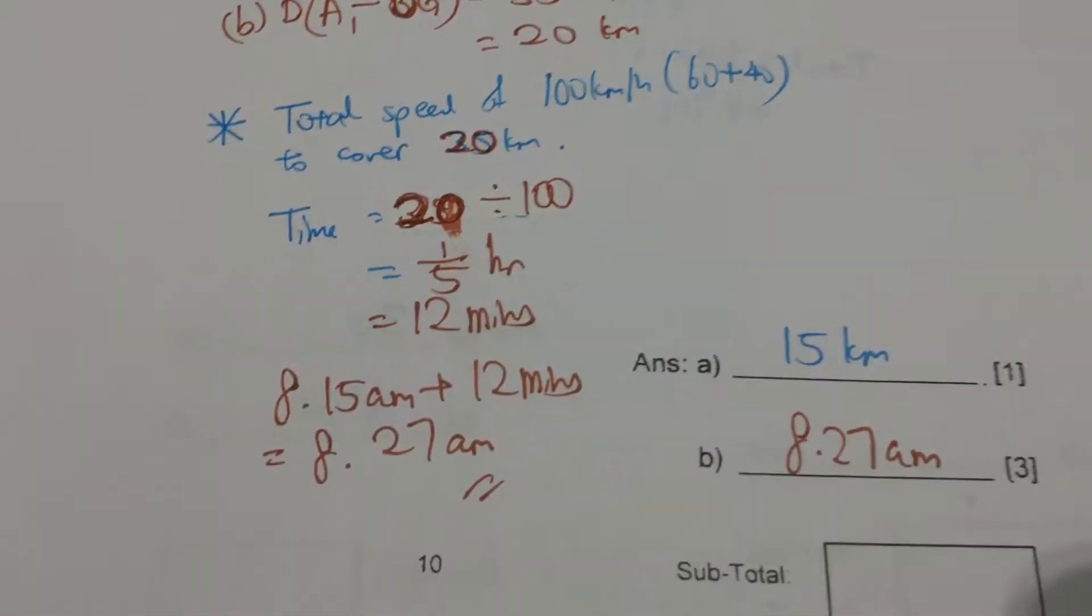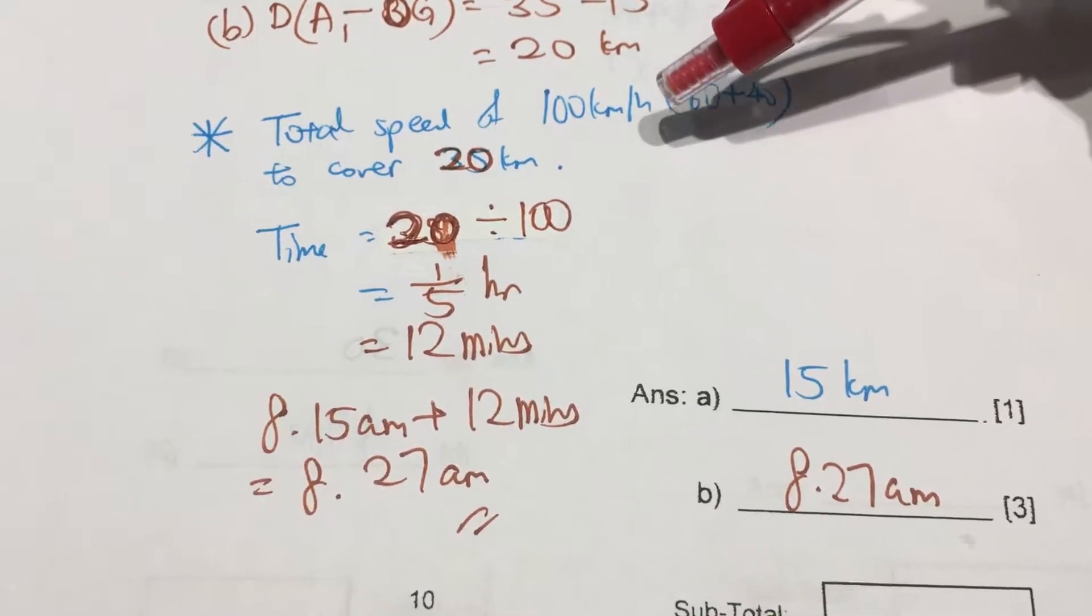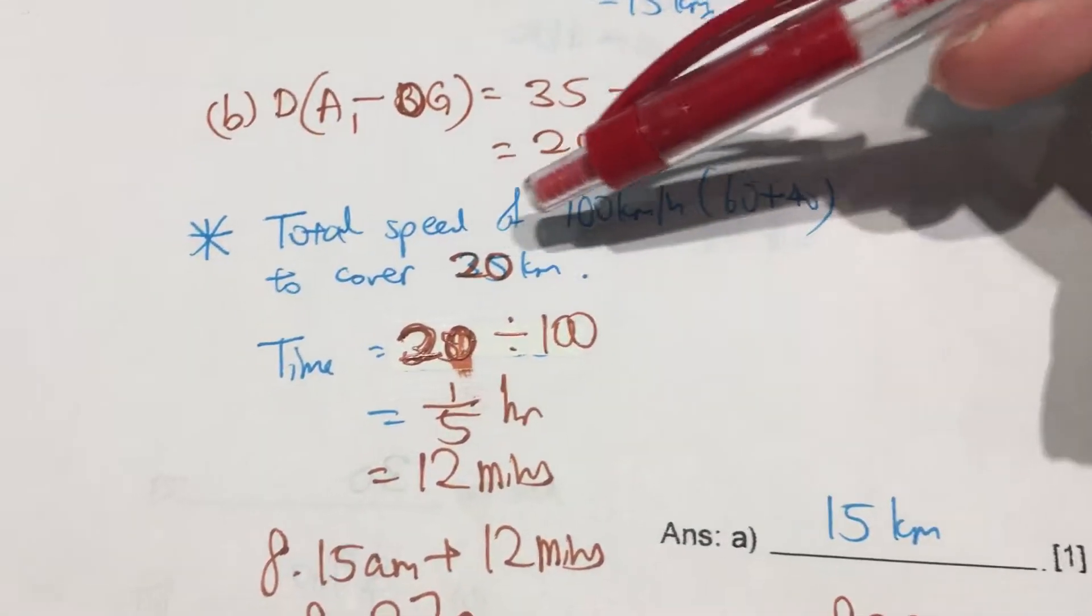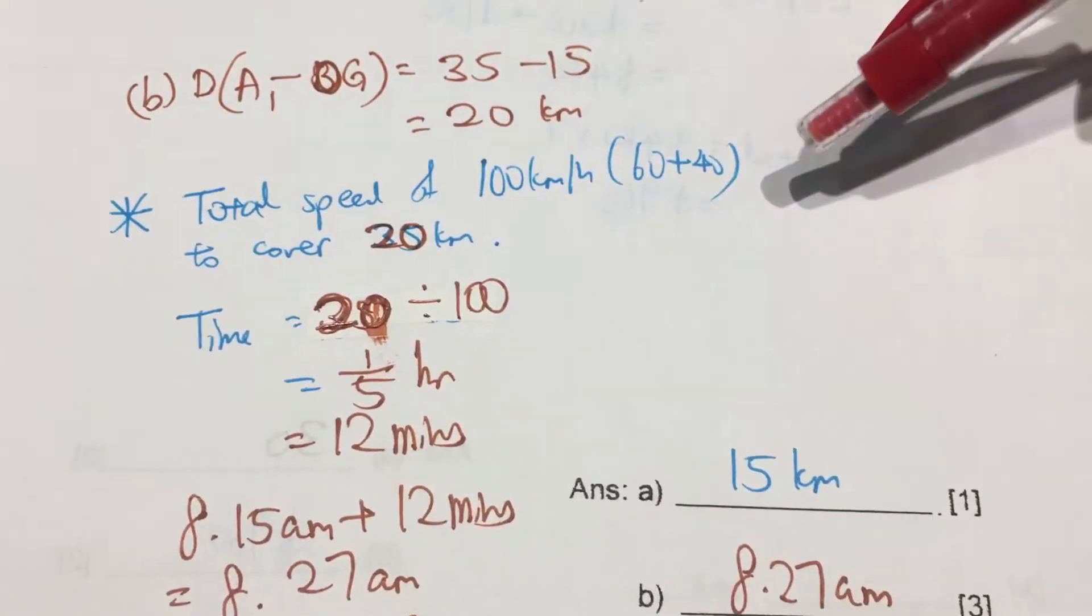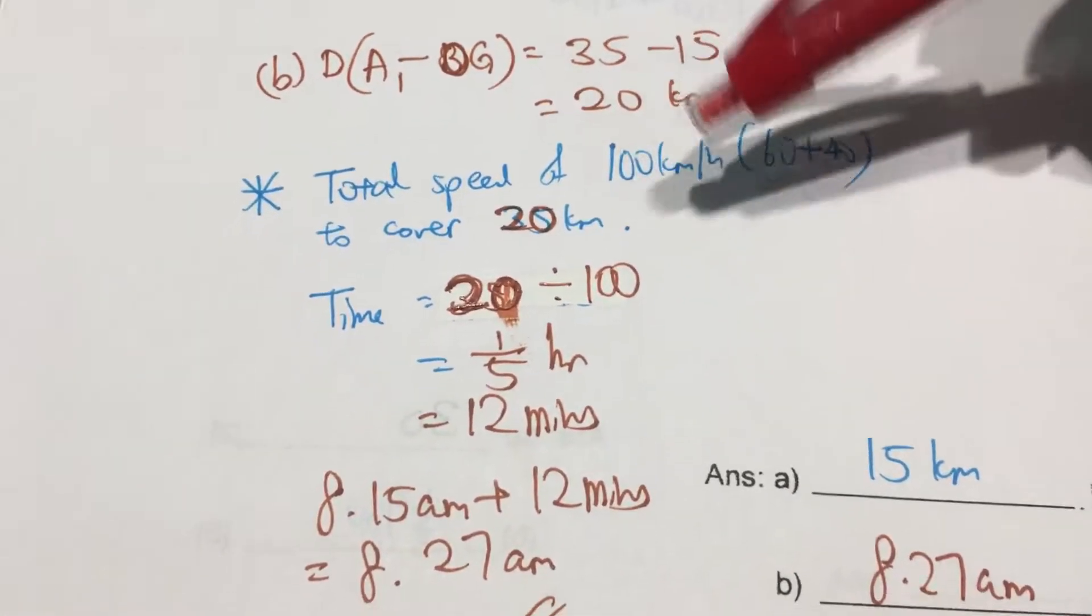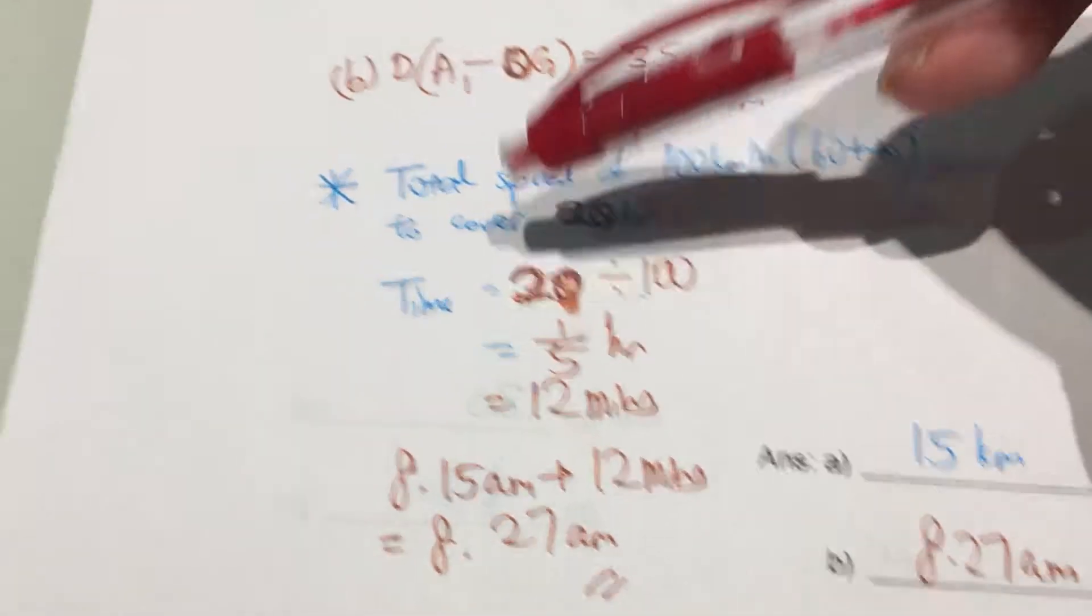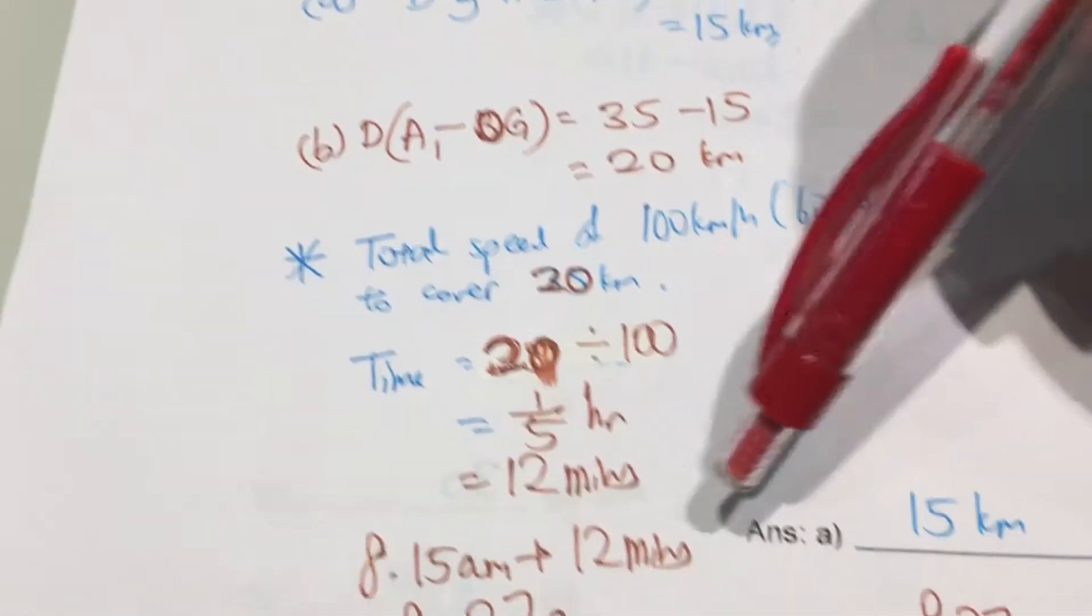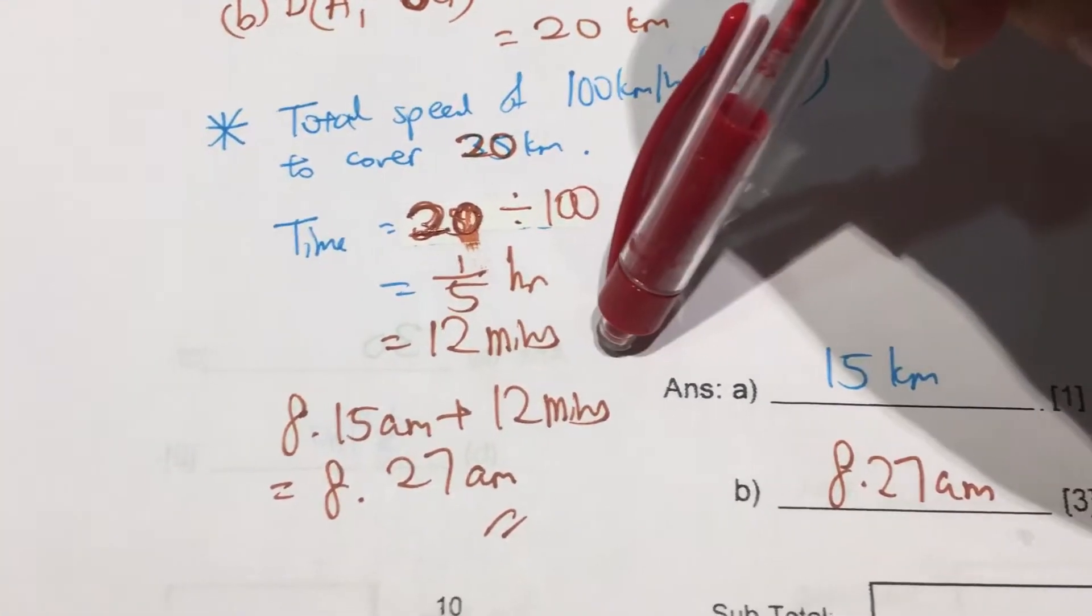So meaning that we can take, so it also means that the total speed of 100km per hour vehicle, which is 60 plus 40, to cover 20km, to cover the remaining 20km. So time will be distance divided by speed, which is 20 divided by 100, which is 1 quarter hour, which gives you 12 minutes.